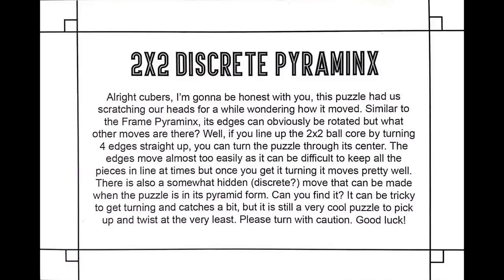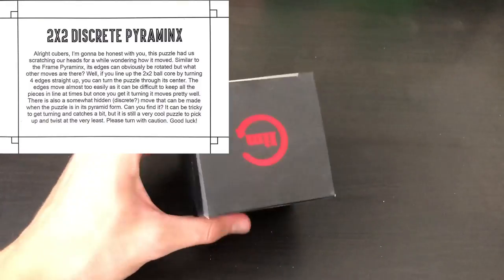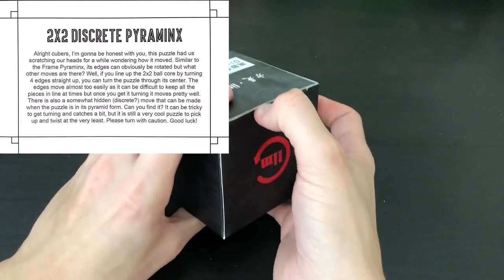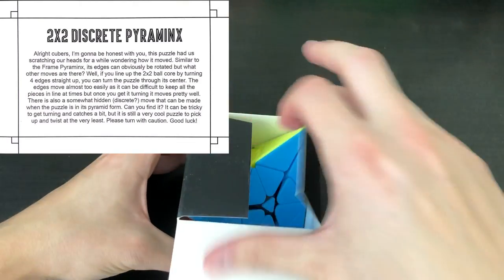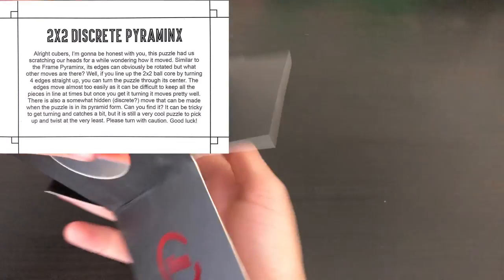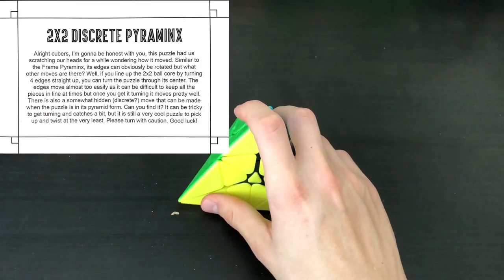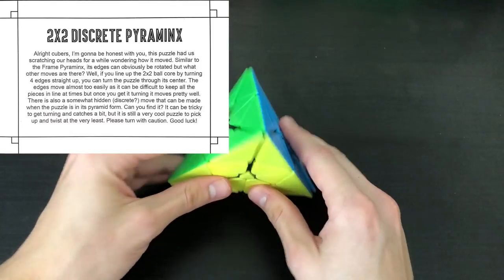The edges move almost too easily as it can be difficult to keep all the pieces in line at times, but once you get it turning it moves pretty well. There's also a somewhat hidden or discrete move that can be made when the puzzle is in its pyramid form. Can you find it? It can be tricky to get turning and catches a bit but it is still a very cool puzzle to pick up and twist. At the very least please turn with caution. Good luck.